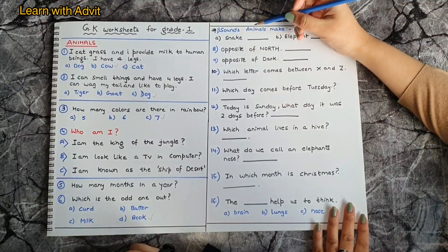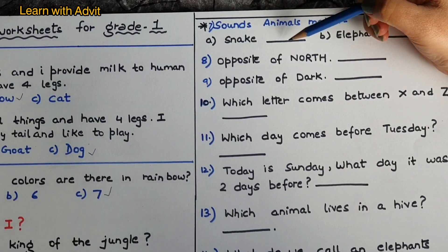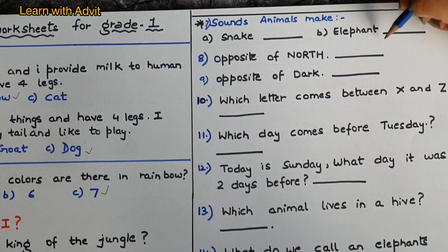So here are some more questions. Sounds animals make. Snake make sound: hiss, yes. Elephant make sound. What is that sound called? It sounds like a trumpet. Trumpet.